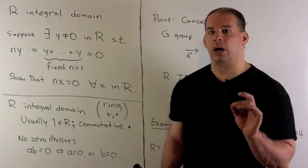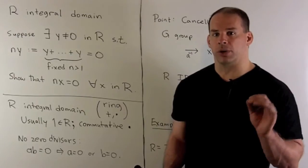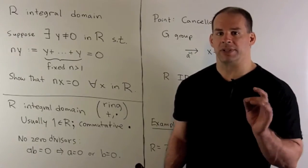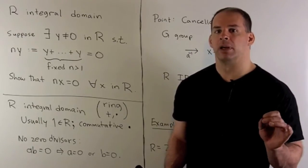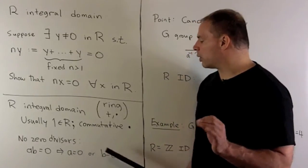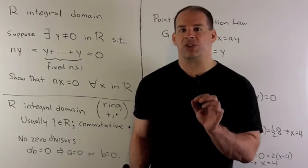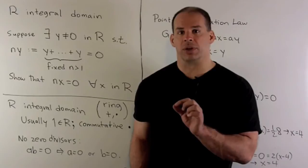The defining property for an integral domain is that there's no zero divisors. So if we take two elements a and b, multiply them together and get zero, that means either a is zero or b is zero. So if you have a product that gives you zero, that means you have to start out with one of your items equal to zero.